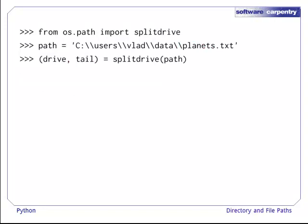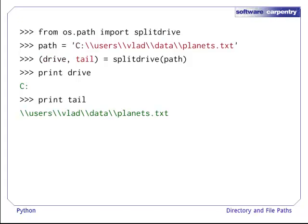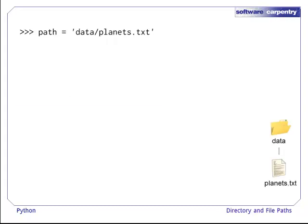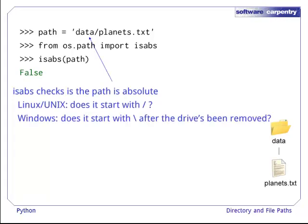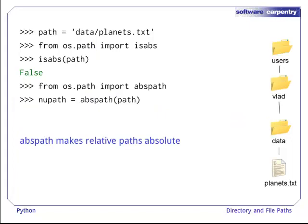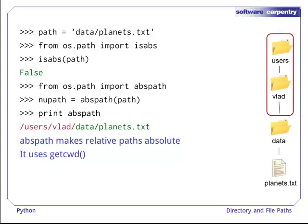Splitdrive also returns a pair, consisting of a drive name — this will be an empty string if running on Linux or Unix — and the rest of the path. We may not know if a path is relative or absolute. Isabs is a function that checks this. It checks whether the path begins with a forward slash for Linux or Unix, or a backslash after the drive has been removed for Windows. Abspath converts a relative path to an absolute path. It uses the current working directory, returned by getcwd, which we saw in an earlier episode.